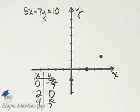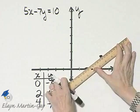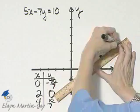Notice they all do lie along the same straight line. And the line through them is the graph of 5x minus 7y is equal to 10. And here's the graph.